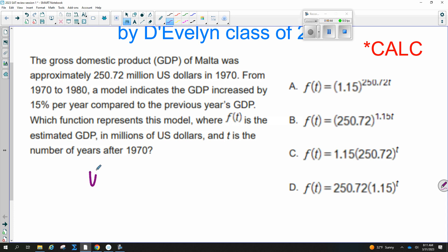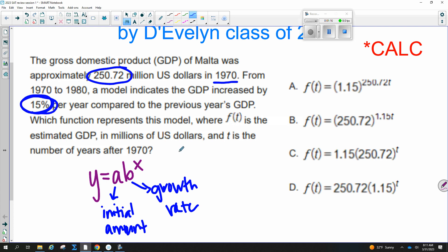So I would work on memorizing this formula for exponential growth. When we're doing exponential growth, A is always the initial amount, and B is always the growth factor or the growth rate. So here this would be our initial amount because we are starting in 1970. And then we are increasing by 15% per year. Now you can't just put 15% in your parentheses. It's 100% plus the 15% we're increasing by. So that would be answer D.